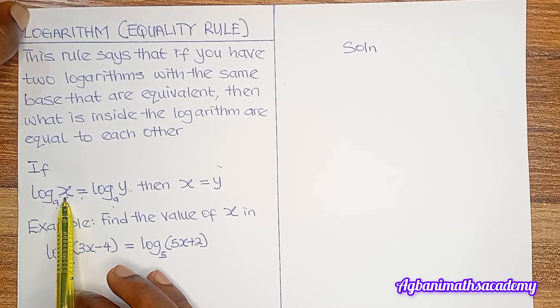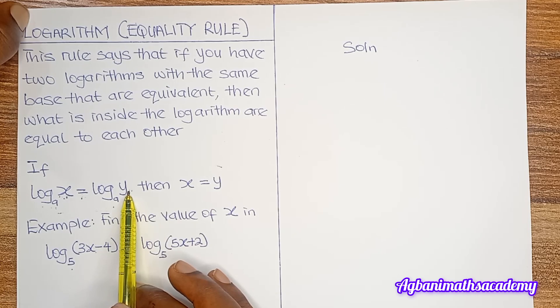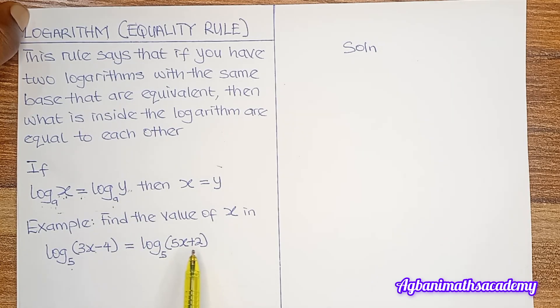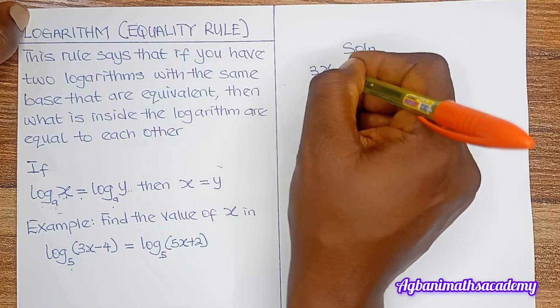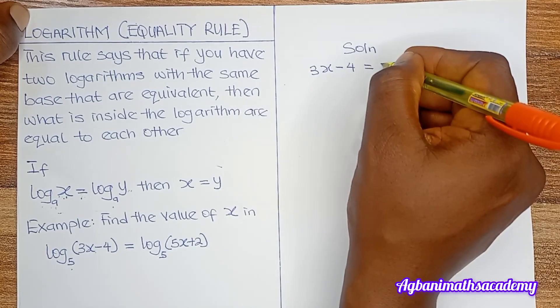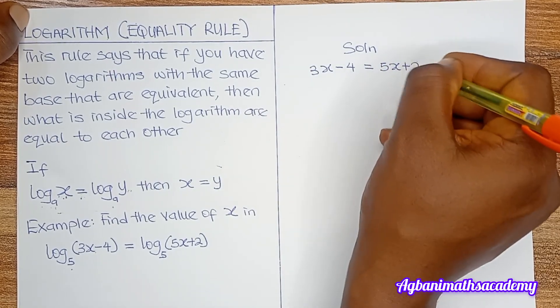So where we have x, we now have 3x minus 4, and where we have y, we now have 5x plus 2. So since we equated x and y, we can simply equate these two. So we have 3x minus 4 is equal to 5x plus 2.